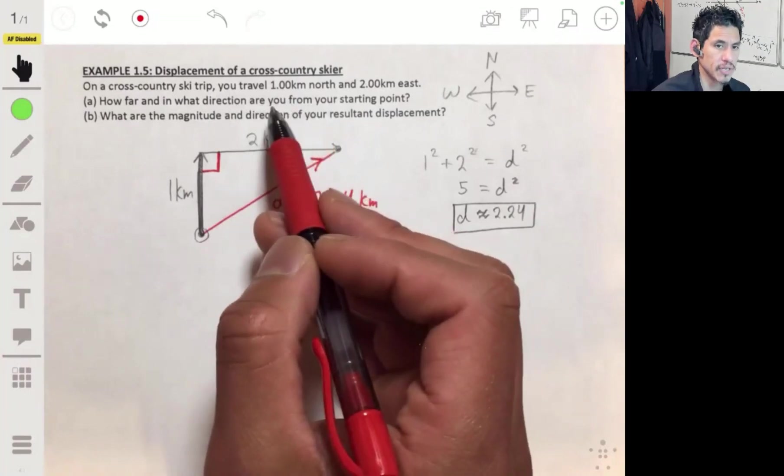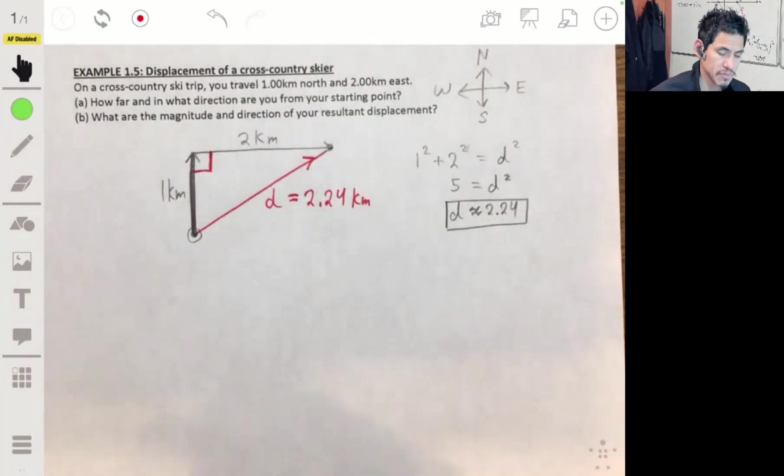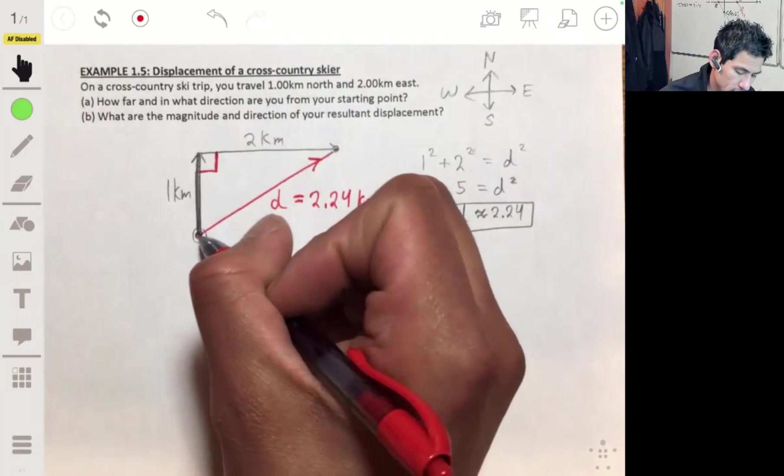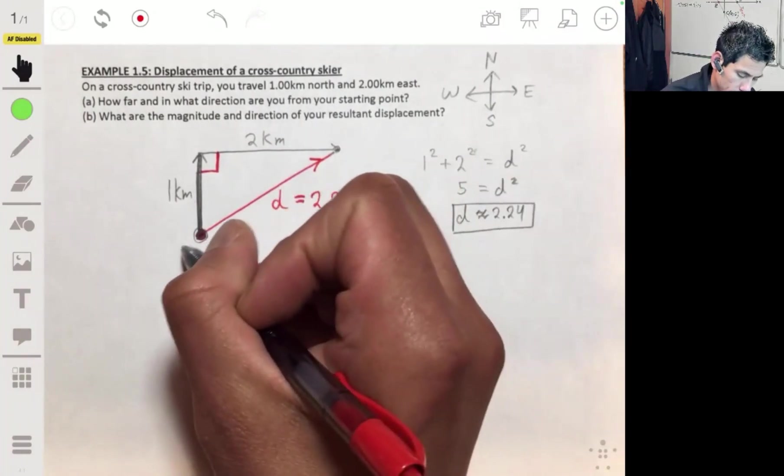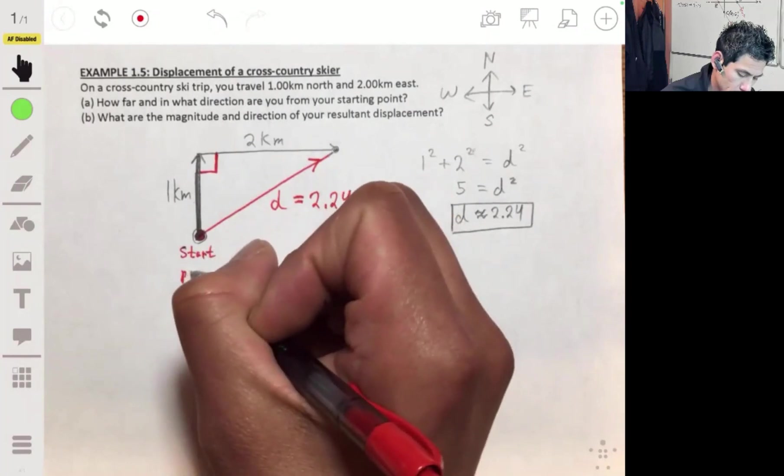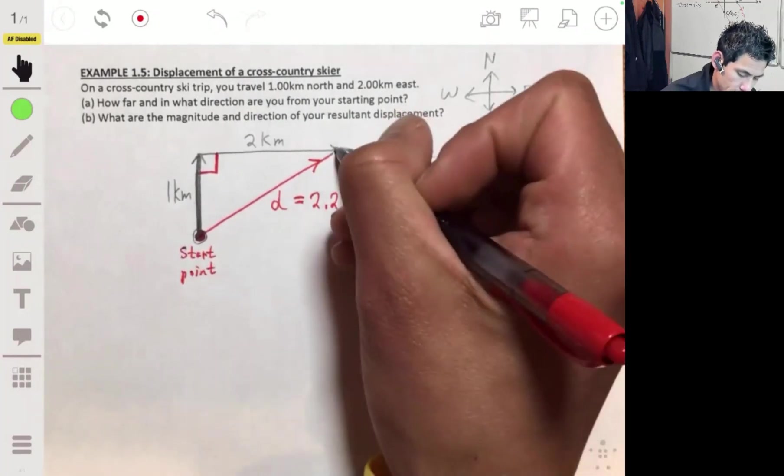We know that we're 2.24 kilometers from our starting point. Now we have to look at the direction. We want to know the angle. We started here at the start point, and we ended here.